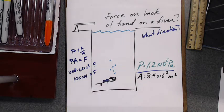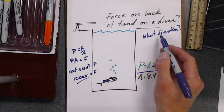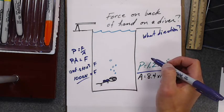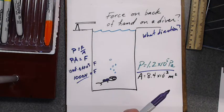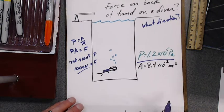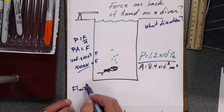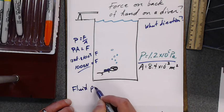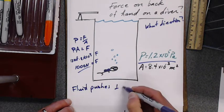That turns out to be 1000 newtons of force. For those of you who don't know, that's around 200-some pounds — that's a lot of force. But what direction is it in? What direction do fluids push on objects? A fluid pushes perpendicular to the surface — it pushes normally.